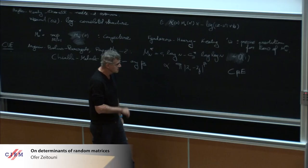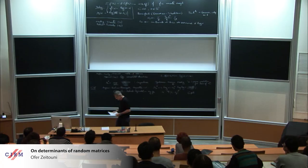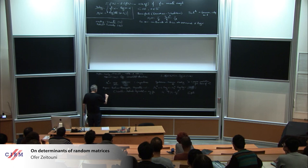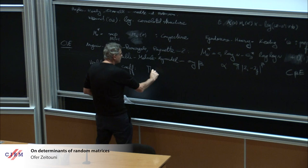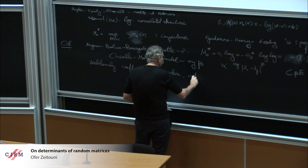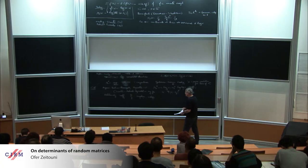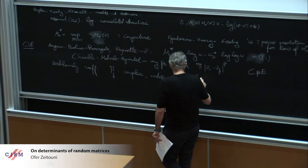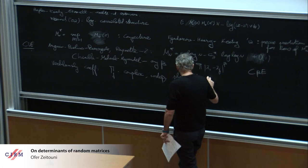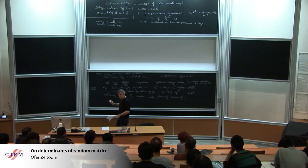The CUE joint distribution of eigenvalues is just a product of lambda_i minus lambda_j to the power 2. There's nothing sacred about the power 2. You can take it to the power beta, and you get what is called the C beta E. There is a representation in terms of large sparse random matrices, five diagonals, using the so-called CMV matrices.